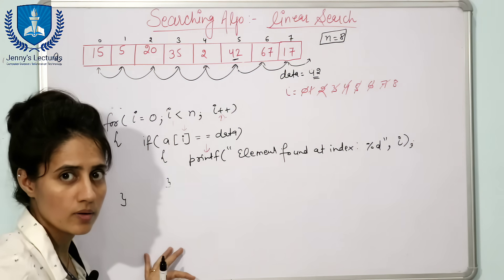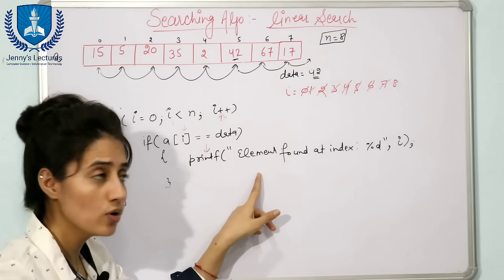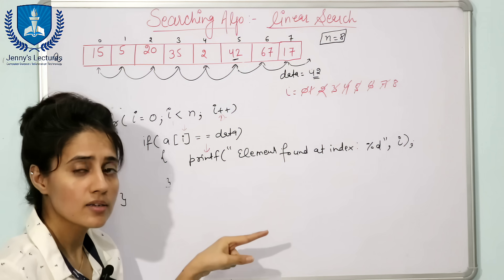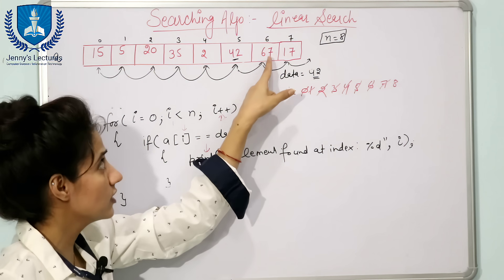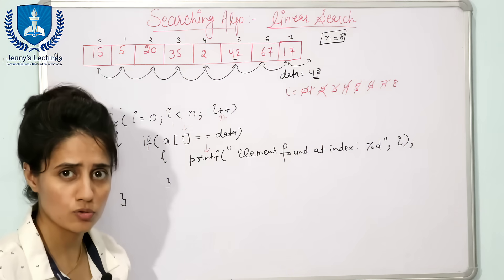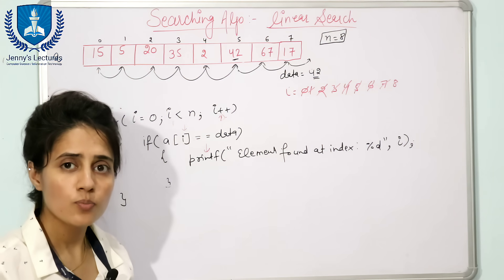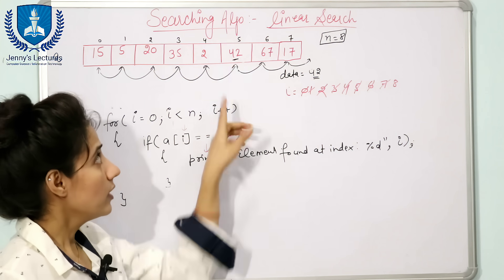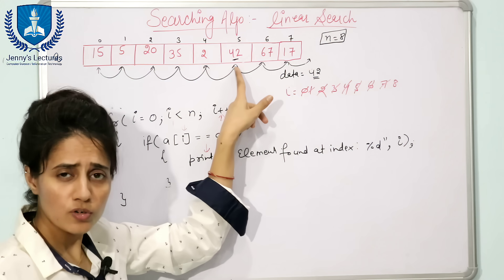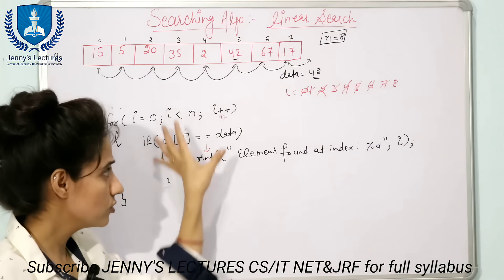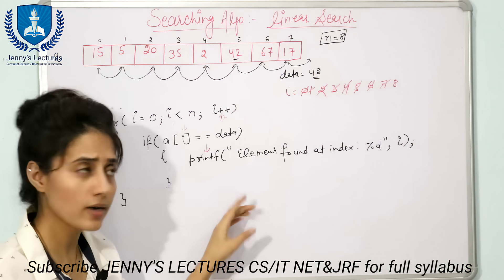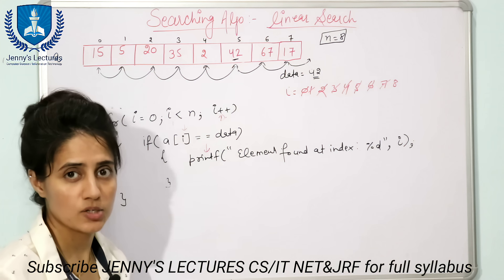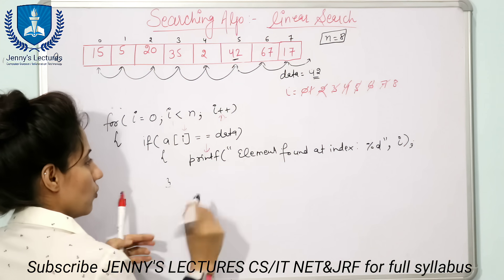The drawback of this code is: we found the element at index 5, but the code is still searching at the 6th and 7th index. What is the point of searching after finding the data? The algorithm should have stopped at index 5. So we need to add one more condition: a break statement.